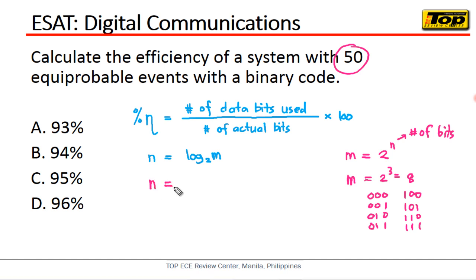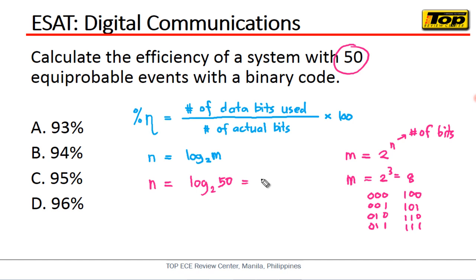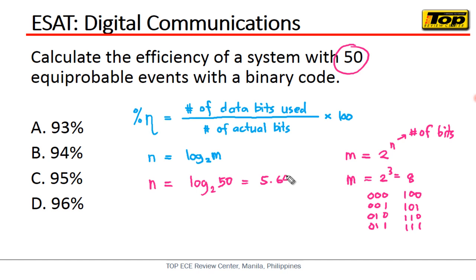n, which is the number of bits, will be the log base 2 of 50. As calculated, that is 5.6439.